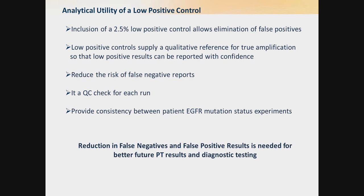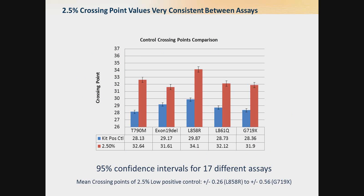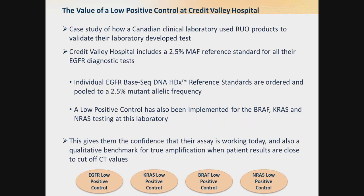There is an additional level of analytical utility in that the control is a QC check for each run and provides consistency between different EGFR mutation status testing experiments. Looking at the crossing point values for this low positive control at 2.5% across 17 different assays, the confidence interval was 95%. They order individual EGFR basic DNA reference standards from Horizon Diagnostics and pool them to a 2.5% mutant allele frequency. They have also included this low positive control for other testing at their laboratory including BRAF, KRAS, and NRAS.